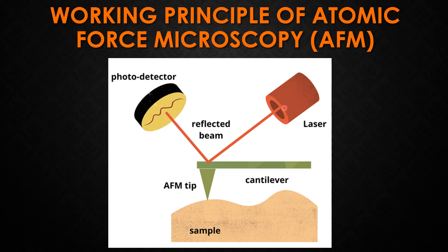The tips are made from silicon compounds with a tip radius of about 10 nanometers. The photodetector records the changes to the reflected laser beam position which is proportional to the movement of the cantilever. Finally, a detailed topographical image of the sample can be captured by scanning across the surface of the material.